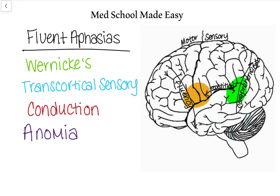If you take anything from these videos, take broken Broca's aphasia, which means there's broken speech, and then word salad Wernicke's — they can say words, but it's jumbled up like a salad. Broken Broca's, word salad Wernicke's. But we're going to go a little bit deeper. That can help you do a better exam on a patient who just had a stroke and figure out if there's something a little bit deeper than just Broca's or Wernicke's, and it will also help with more advanced test questions.